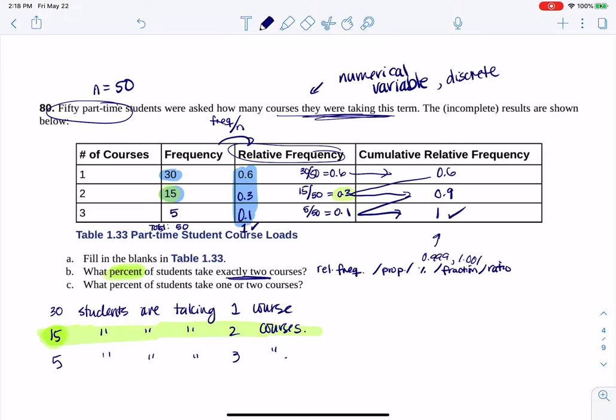Okay, now for part C, if we take a look at part C, again we've got percent, but this is taking one or two courses. So we know that 30 students are taking one course, 15 students are taking two courses.